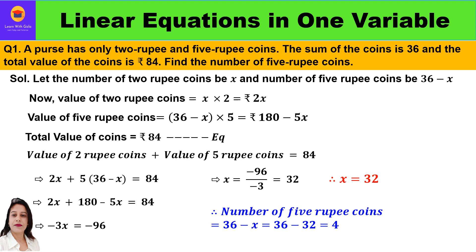The first question is: a purse has 2-rupee and 5-rupee coins. The sum of the coins is 36 and the total value of the coins is rupees 84. Find the number of 5-rupee coins. In this particular question we have a purse which has 2-rupee coins as well as 5-rupee coins.